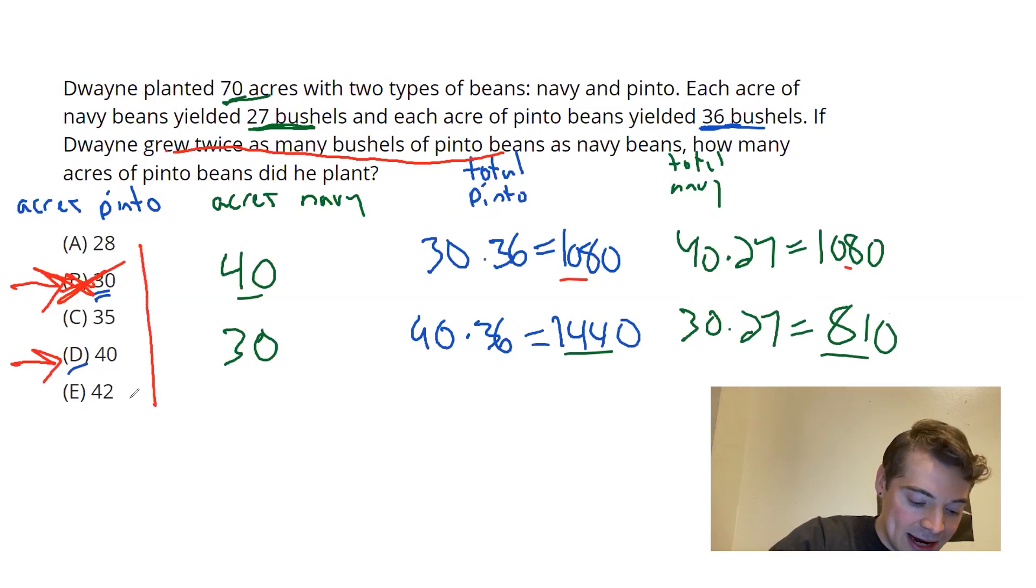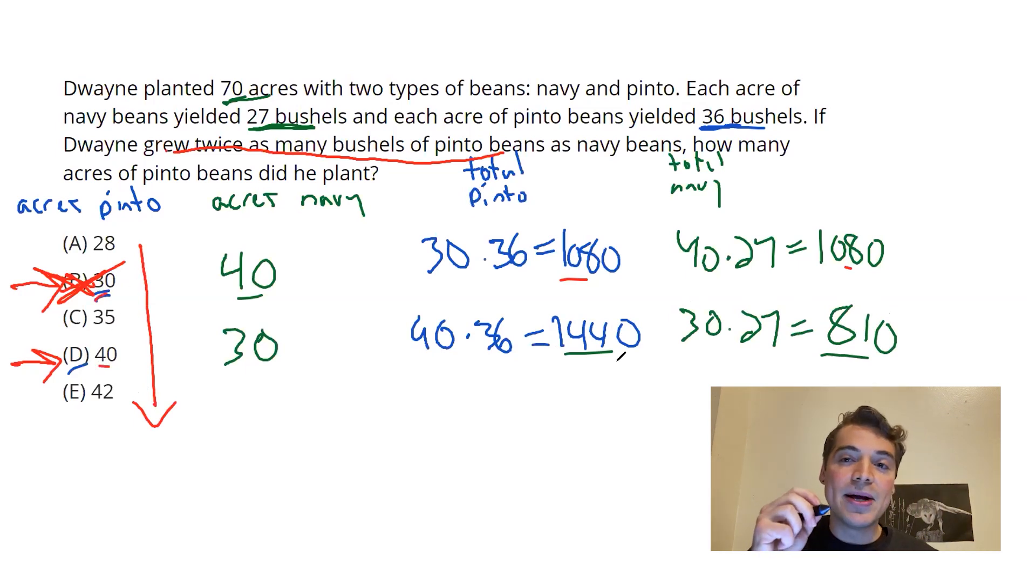Recall that all these answer choices are in ascending order. And we've seen that as I increased my acres of pinto, I got closer to my goal. D didn't quite achieve it. But because I'm getting closer as I increase the acres of pinto, that means the answer has to be E. There's only one other possibility there. E is the only one bigger? There's your answer.